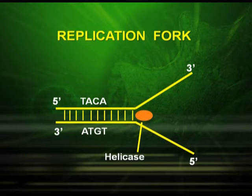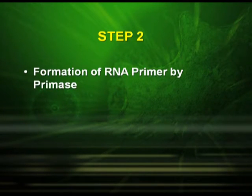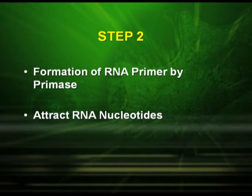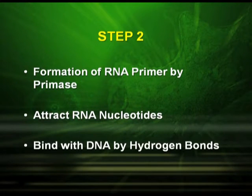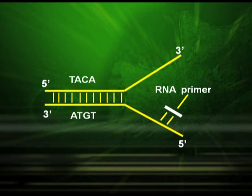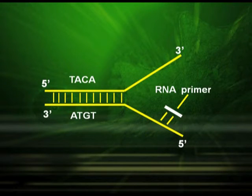In step 2, the replication fork is complete. This step includes the formation of an RNA primer by the enzyme primase. The primase enzyme attracts RNA nucleotides, which bind with DNA by hydrogen bonds. As shown in the picture, the RNA primer — shown in green color — is formed with the help of the primase enzyme based on the DNA strand template.